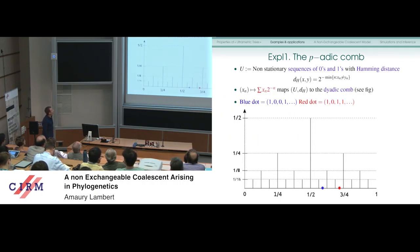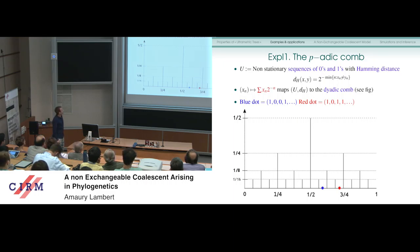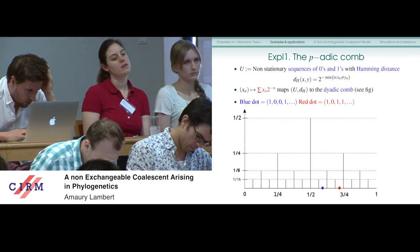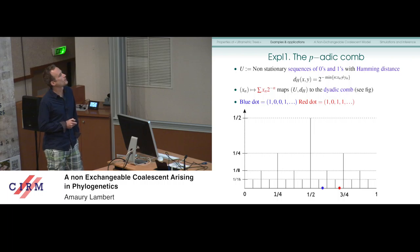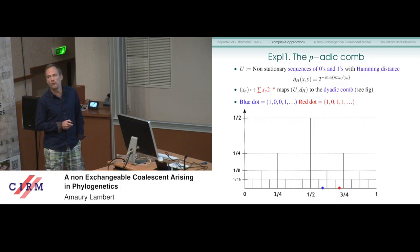Let me show some examples of these comb metrics. The first one is the dyadic comb. The set of non-stationary sequences of zeros and ones is ultrametric when embedded with the Hamming distance: you take two sequences x and y, and the distance between them is 2 to the power minus the minimum index where the sequences differ. So if you take any sequence starting with 1,0,0,1 and any sequence starting with 1,0,1,1, the distance between both is 1 over 8.